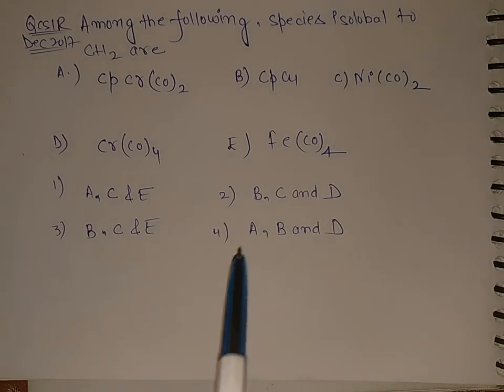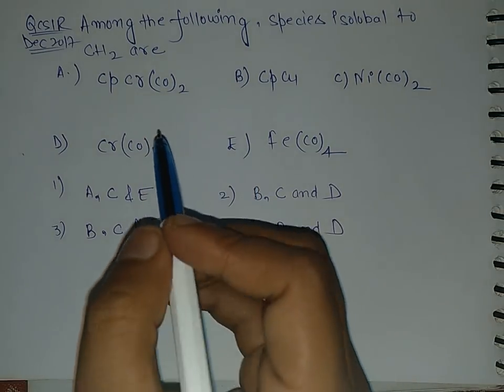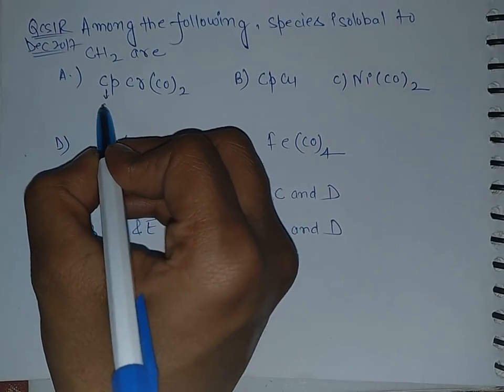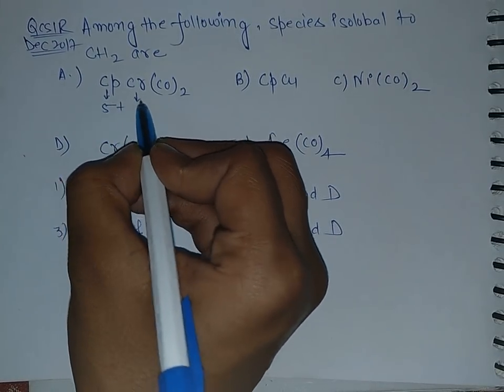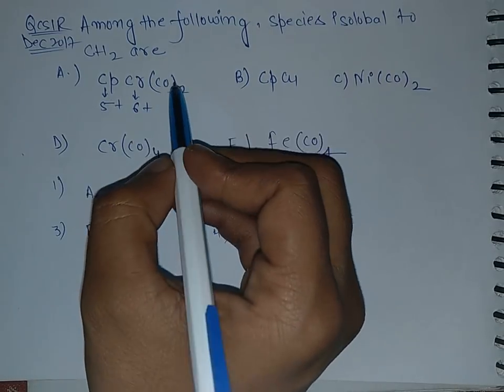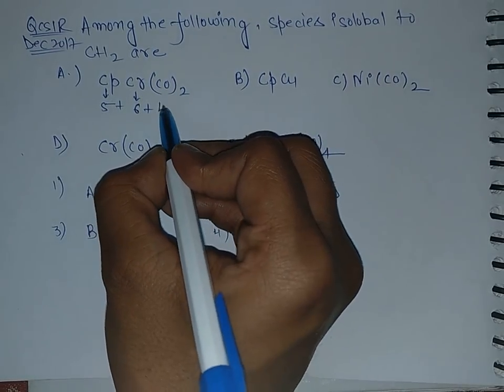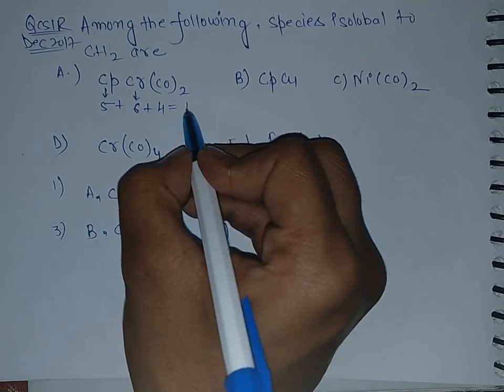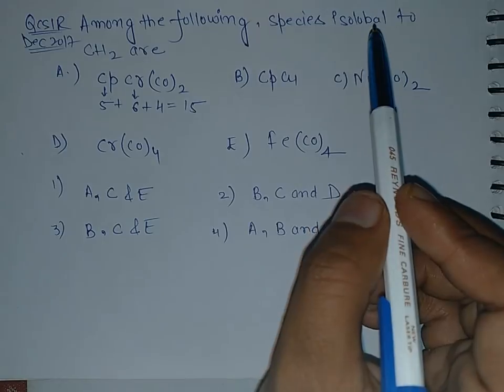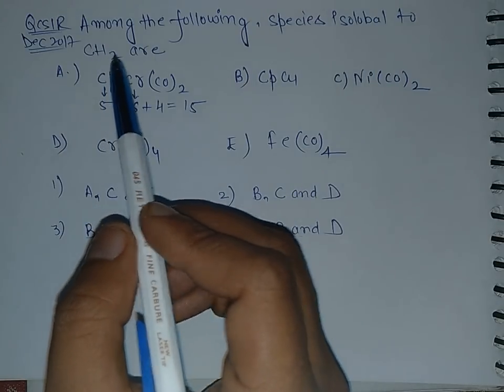Now let's start with the question. This is CP, this is 5 electron plus, this is chromium 6+ carbonyl. Carbonyl is a 2 electron donor, so 2 times 4 equals 15. In the question we are asked to match the isolobal of CS2.